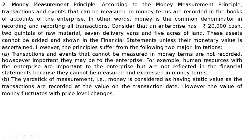The second principle is the Money Measurement Principle. According to this principle, transactions and events that can be measured in money terms are recorded in the books of accounts of the enterprise. In other words, money is the common denominator in recording and reporting all transactions. For example, an enterprise may have Rs. 20,000 cash, 2 quintals of raw material, 7 delivery vans and 5 acres of land — these assets cannot be added unless their monetary value is ascertained.